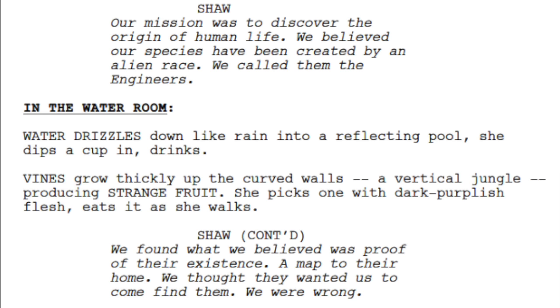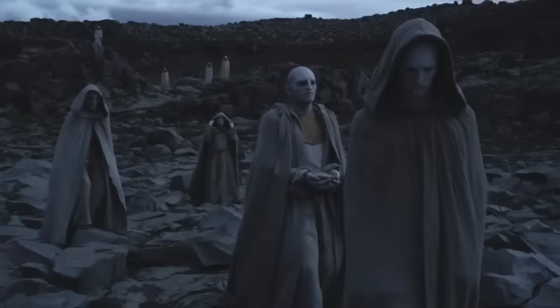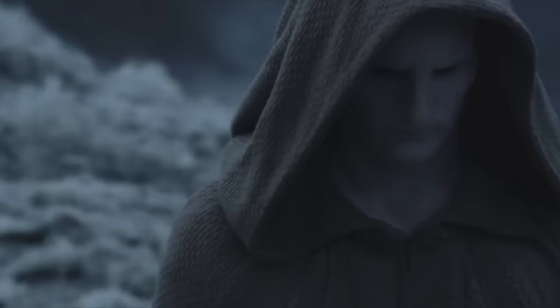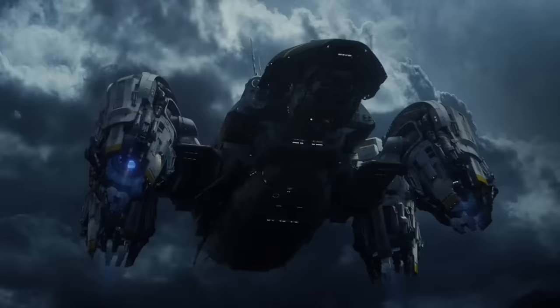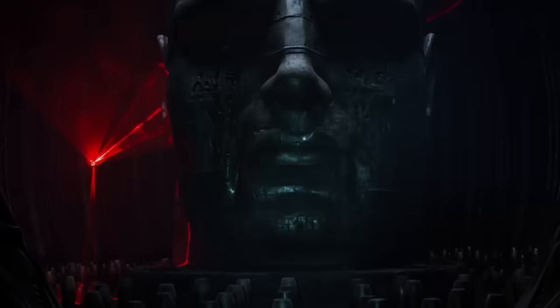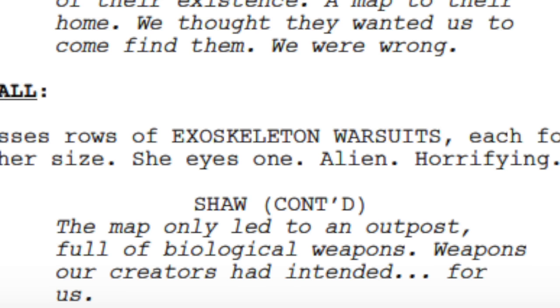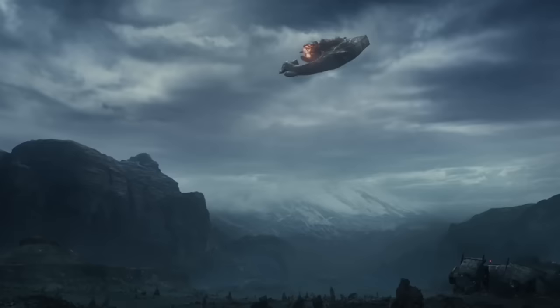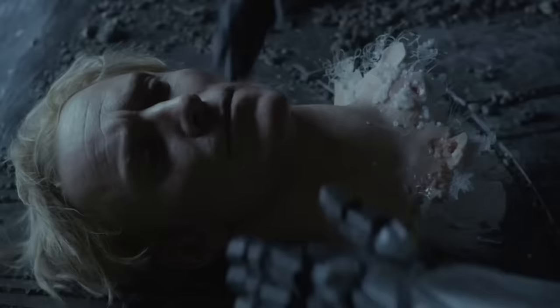Our mission was to discover the origin of human life. We believed our species had been crafted by an alien race. We called them the engineers. We found what we believed was proof of their existence, a map to their home. We thought they wanted us to come find them. We were wrong. The map only led to an outpost full of biological weapons — weapons our creators had intended for us. Three days after we made first contact, the Prometheus was destroyed. All hands were lost.